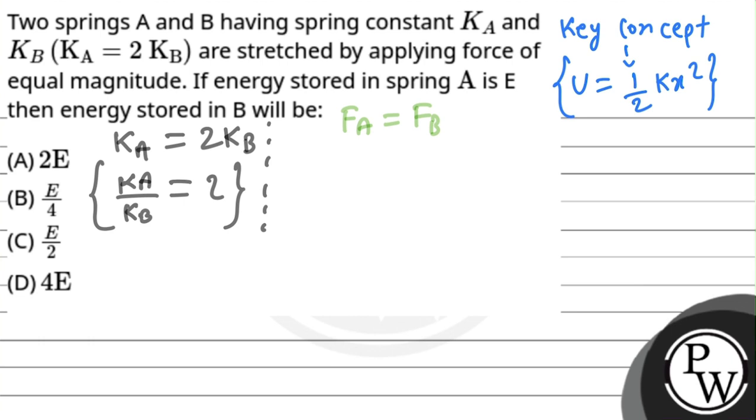So the formula is minus KA XA equals minus KB XB. The negatives will be cancelled out. So we have XA upon XB equals KB upon KA.